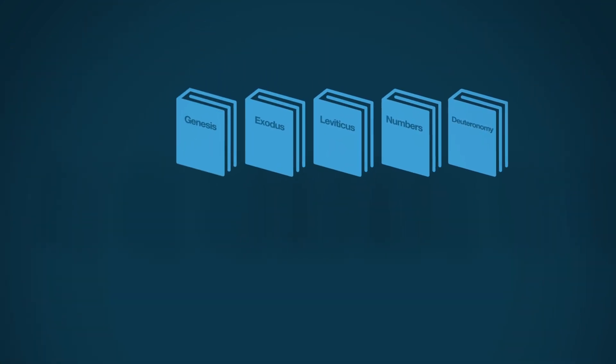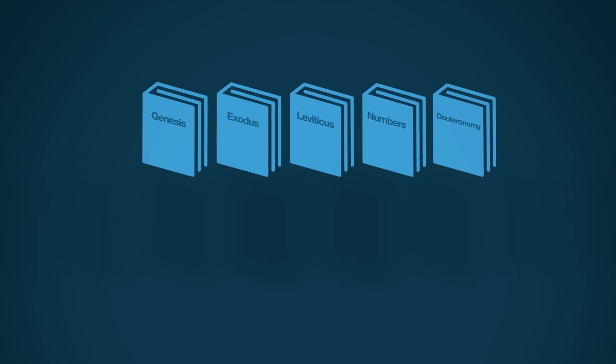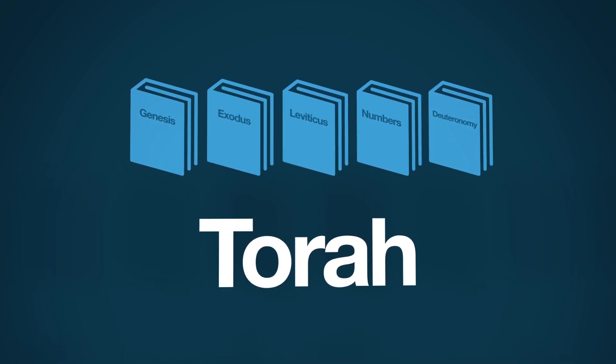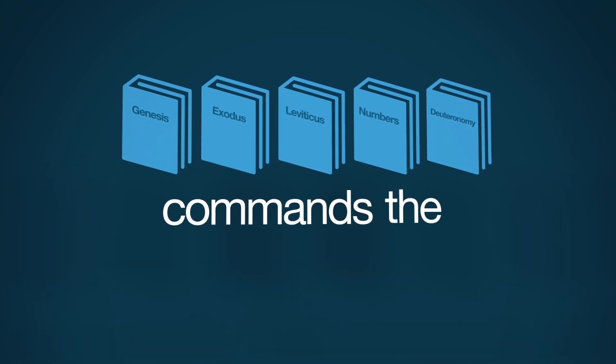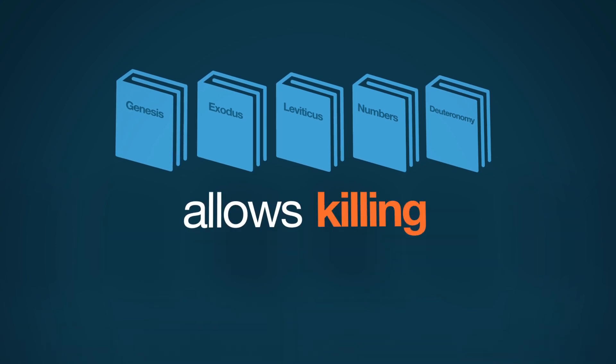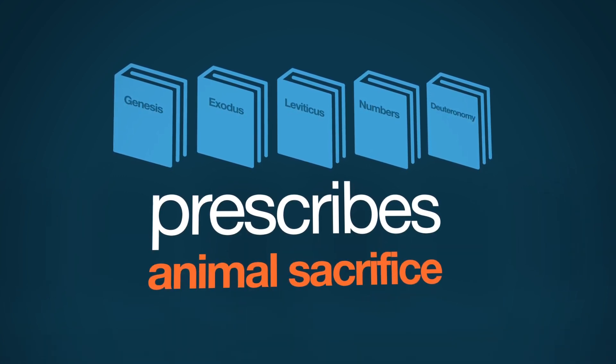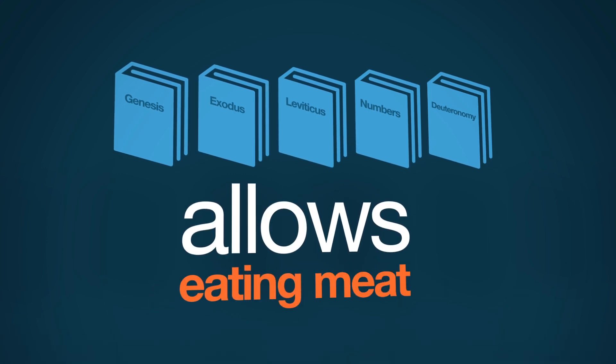However, you don't have to know how the English language has evolved to understand that the Ten Commandments could not have prohibited all killing. The very same part of the Bible that contains the Ten Commandments — the five books of Moses, the Torah — commands the death penalty for murder, allows killing in war, prescribes animal sacrifice, and allows eating meat.